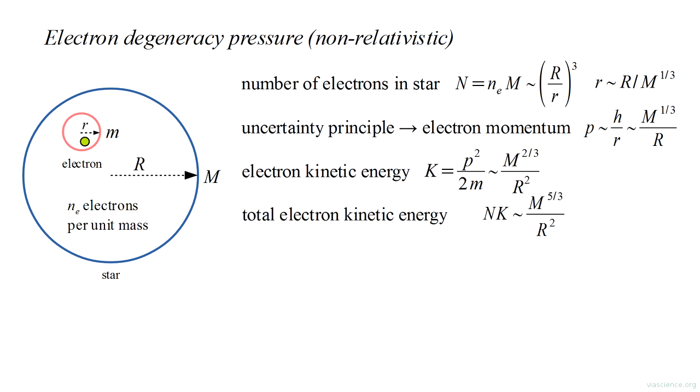Multiplying by the number of electrons, we get the total kinetic energy. Since the number of electrons varies as the star's mass, we obtain a total kinetic energy of big-M to the five-thirds power over big-R squared.